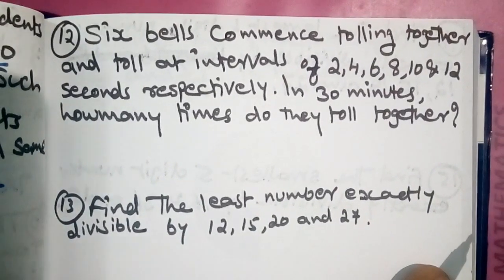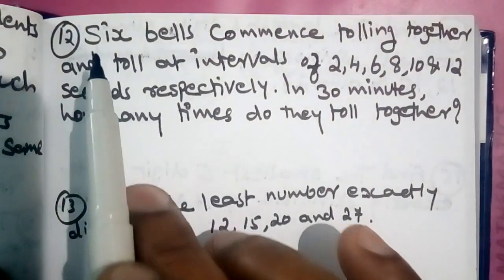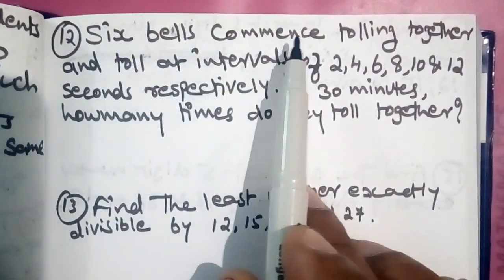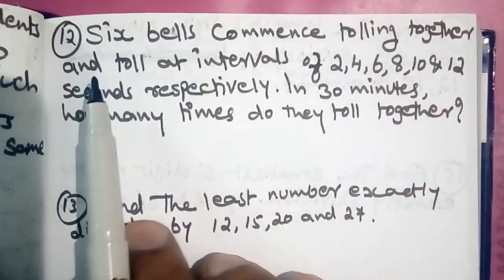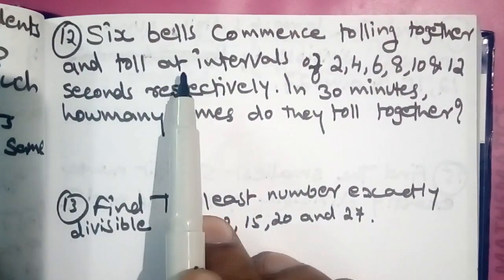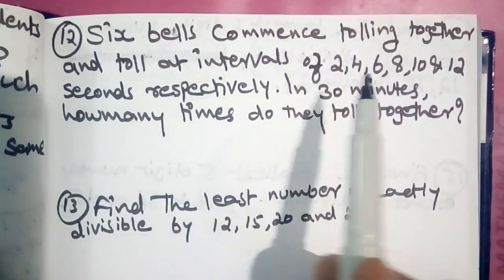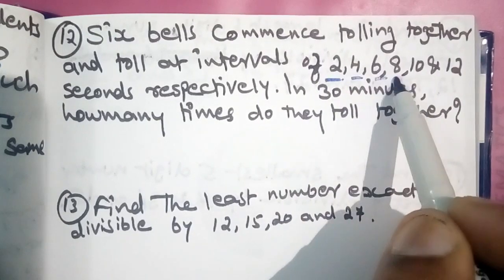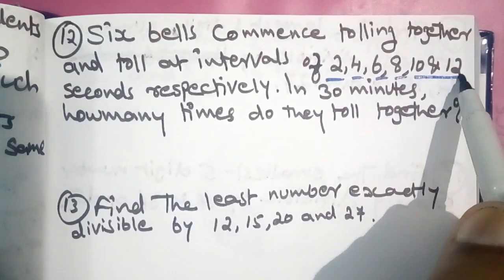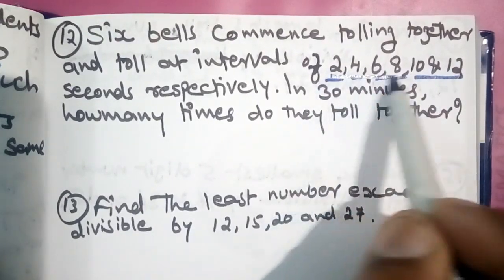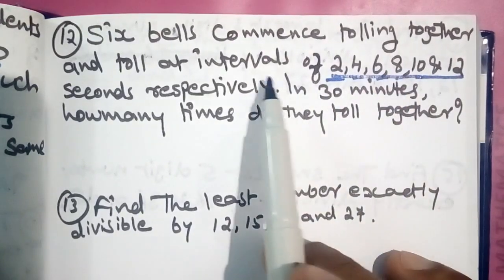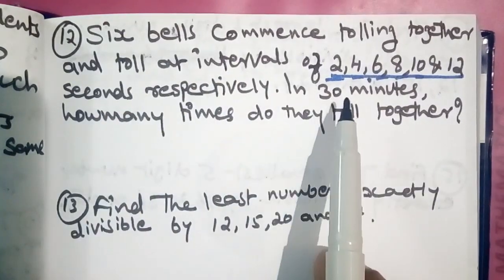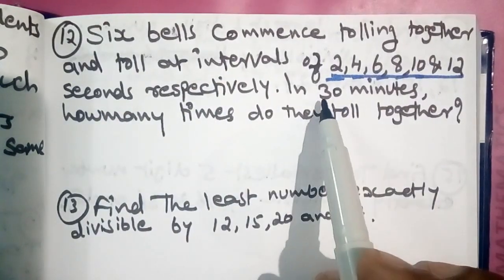The next question: 6 bells commence tolling together and toll at intervals of 2, 4, 6, 8, 10, and 12 seconds respectively. In 30 minutes, how many times do they all toll together?